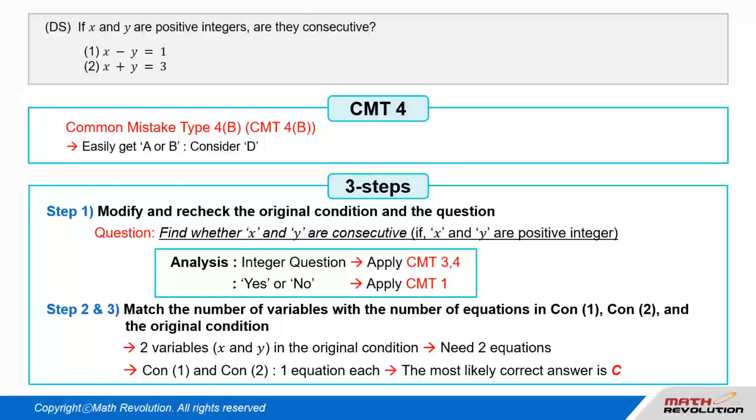Follow the second and third steps. From the original condition, we have two variables, x and y. To match the number of variables with the number of equations, we need two equations. Since conditions 1 and 2 will provide one equation each, C would most likely be the answer.